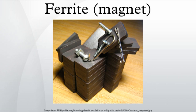Ferrites can be divided into two families based on their magnetic coercivity — their resistance to being demagnetized. Hard ferrites have high coercivity; they are difficult to demagnetize and are used to make magnets for devices such as refrigerator magnets, loudspeakers, and small electric motors.